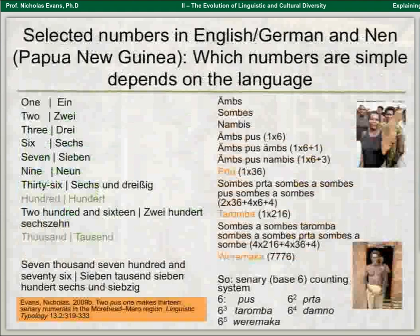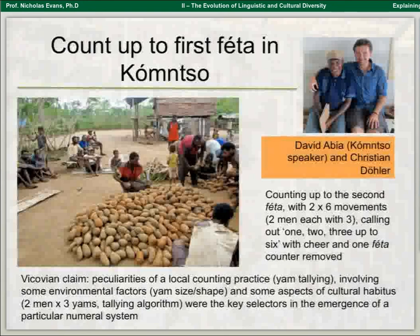Where does the 6 come from? You can count six ways out of the palm, or some people say there was an ancestor who lost a finger. But there's probably a different reason. Unfortunately, Nen speakers don't practise the yam counting ritual anymore — they've been thoroughly Christianised. But 100 kilometres to the west is another language called Kamsul from the same group, and my PhD student Christian Duda worked with David Abia and others to record this ritual.